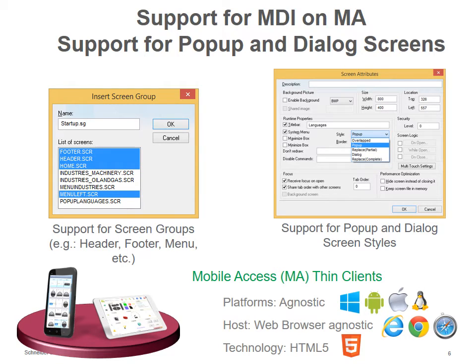The way you do that is you create these screens and then you can create a screen group and select which screens are going to be in that group. This allows us to also have support for pop-up and dialog screens, since now we can have multiple screens open at the same time on Mobile Access. That means on the browser — on your iPad, your tablet, your iPhone, Android phone, or Windows phone — you can actually control your project from all these devices, as long as you're running an HTML5-ready browser.